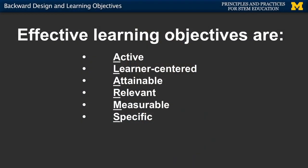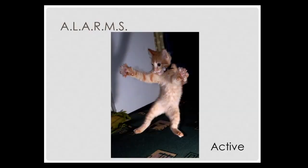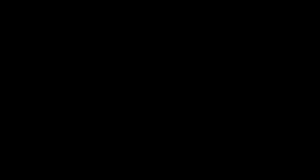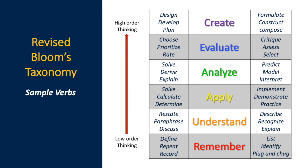Now that we've looked at the general types of learning objectives, we need to look at how to optimize them so they're truly useful for us as instructors and for our students. Useful learning objectives typically embody six different traits, and there's a good mnemonic to help you remember all of them — the acronym ALARMS. Effective learning objectives are first active. A useful learning objective requires your students to do something to prove they have met the objective — every learning objective should include an active verb. One resource for finding active verbs is the Bloom's Taxonomy wheel, which has different categories of knowledge and skills and provides active verbs you could use when writing learning objectives.